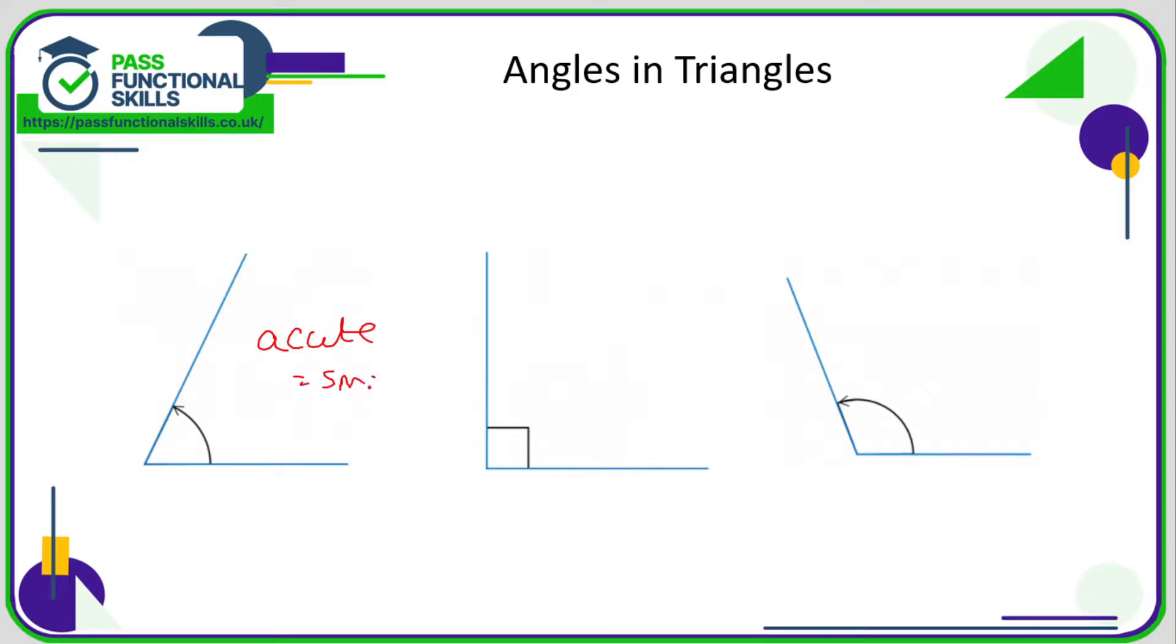The next angle we've got here, this square angle here, if we've got that square there then that is called a right angle, and a right angle is 90 degrees. So whenever you see this symbol here, that tells us it's a right angle, in other words it has a value of 90.